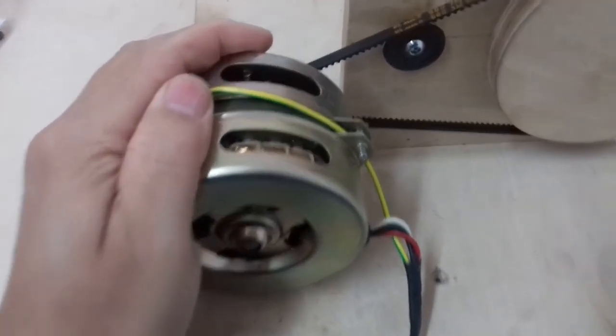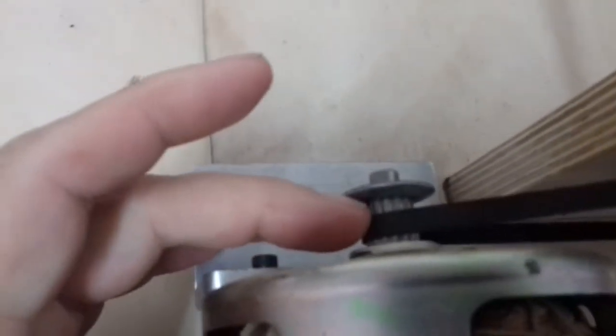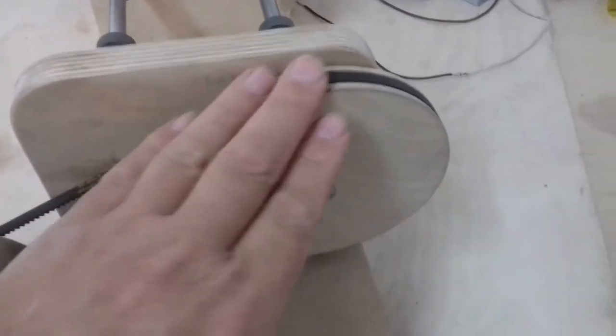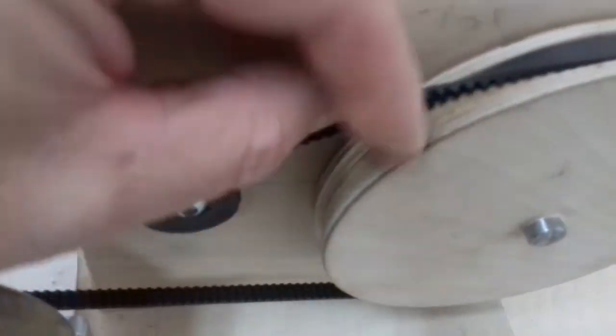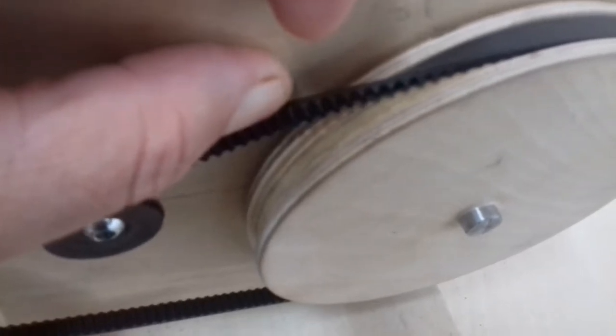At the drive end I have a second hand motor which I got out of a photocopying machine which came with its own dedicated toothed drive and belt. The main drive wheel is turned out of plywood and to get it to grip better I just put an elastic band in there for the rubber belt to grab against.